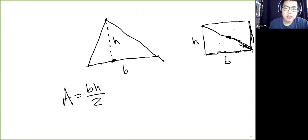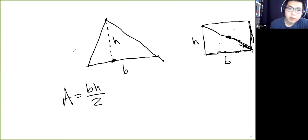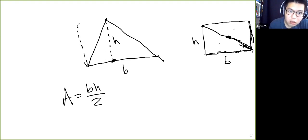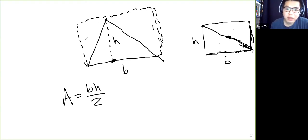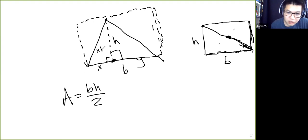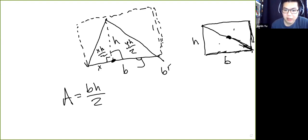Now let's figure out the case where the top angle is within the boundaries — an acute triangle. We draw another rectangle. Now we have two right triangles. We call this x and this y. Then we know that this is xh/2 and this is yh/2. When we add these together, we get (x + y)h/2 — exactly what we want.